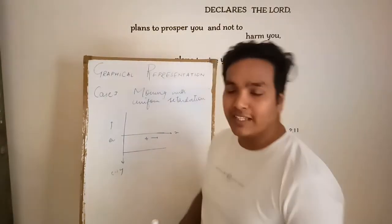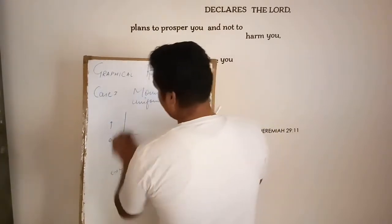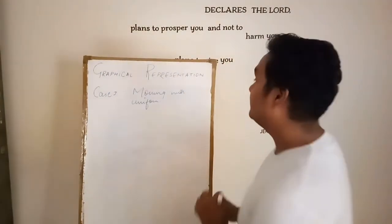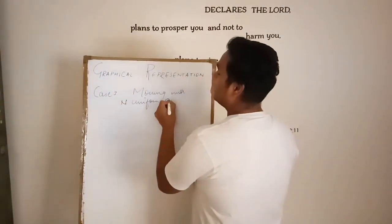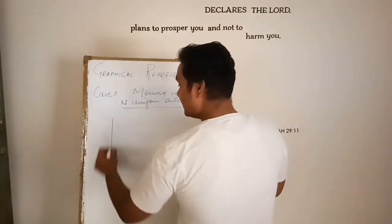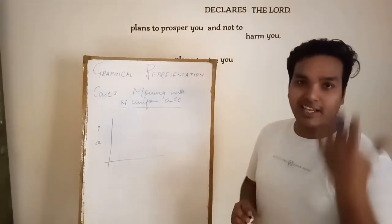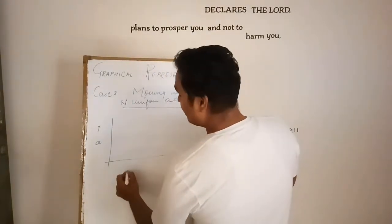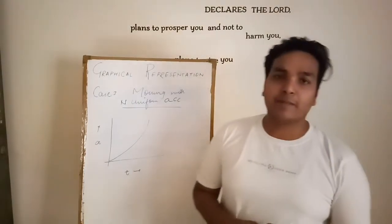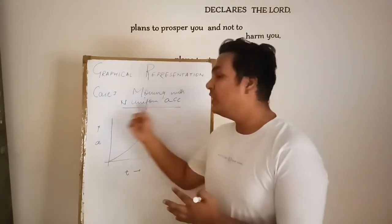The fourth case is when a body is moving with non-uniform acceleration. Non-uniform acceleration means the acceleration is not the same — it is changing or varying. This is similar to the non-uniform velocity case; you can draw any form of curve. It should not be a straight line; it can be any curve.